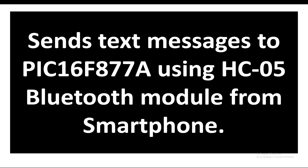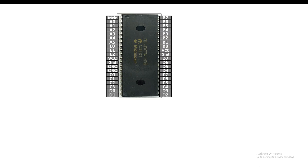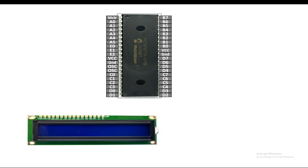So let's get started. This is our PIC16F877A microcontroller having 40 pins in a DIP variant. This is a 16x2 LM016L LCD, and this is the potentiometer we will need to connect this LCD with the PIC — it will be used to adjust the contrast. Before going to the HC05, let's first connect the LCD.